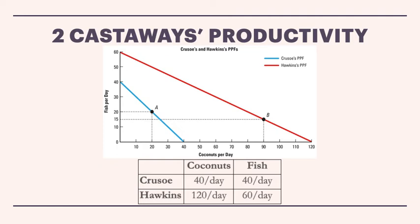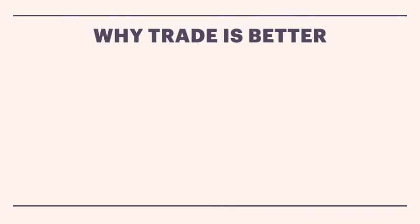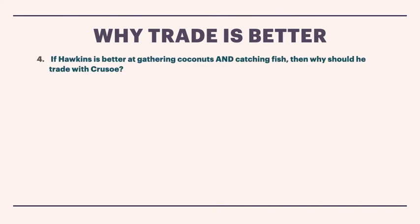These two guys are on the island and they have a choice to make: they can either stick to themselves and gather what they're able to gather on their own, or they can trade. Now as you can see, Hawkins has an advantage — he has what's called an absolute advantage. He can get more fish and he can get more coconuts. You might say it would be silly for Hawkins to trade because he can't benefit. But that's not quite right. The answer is something called comparative advantage.